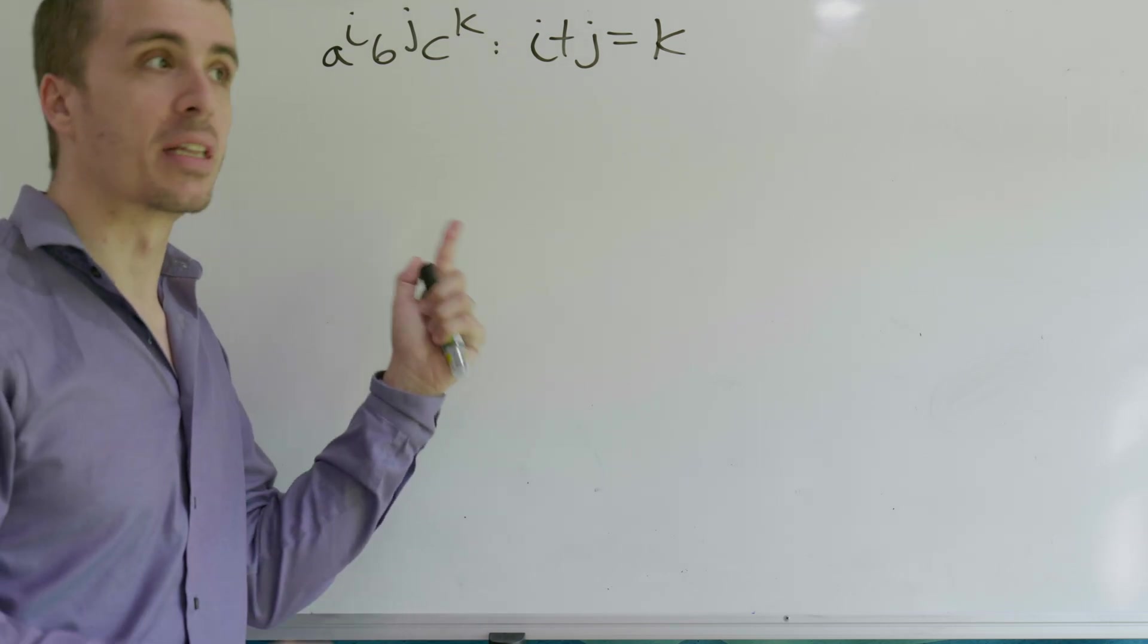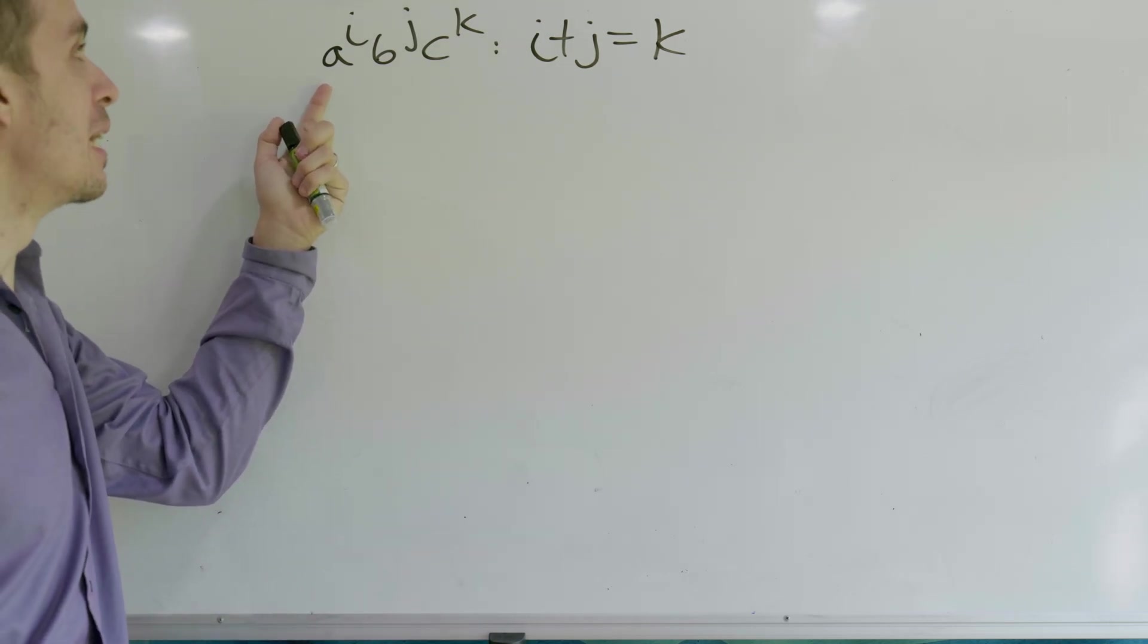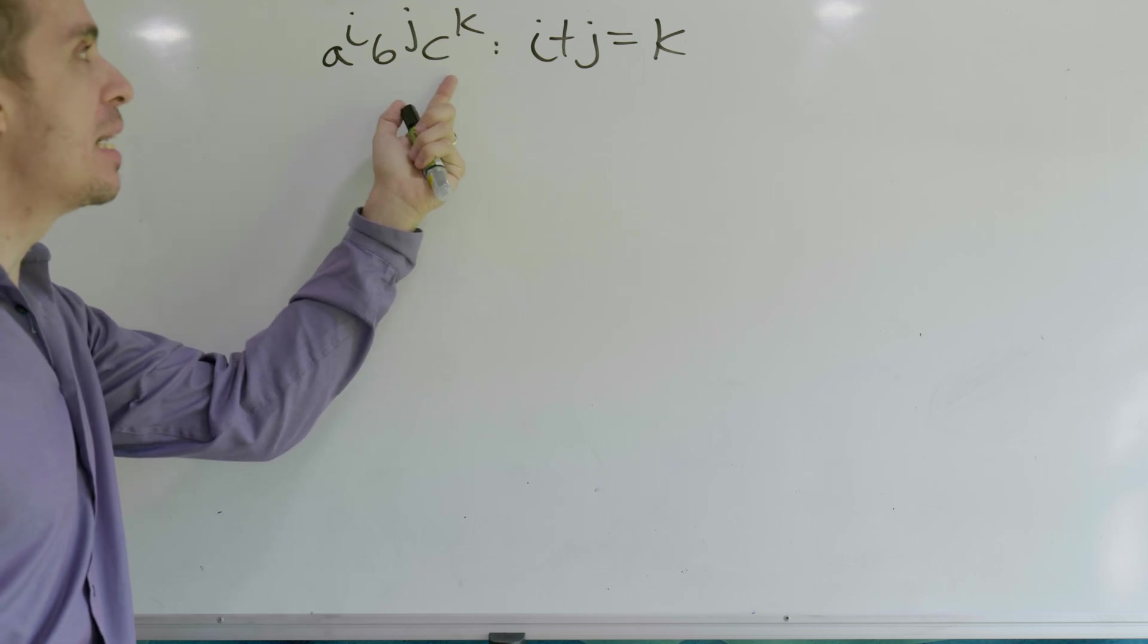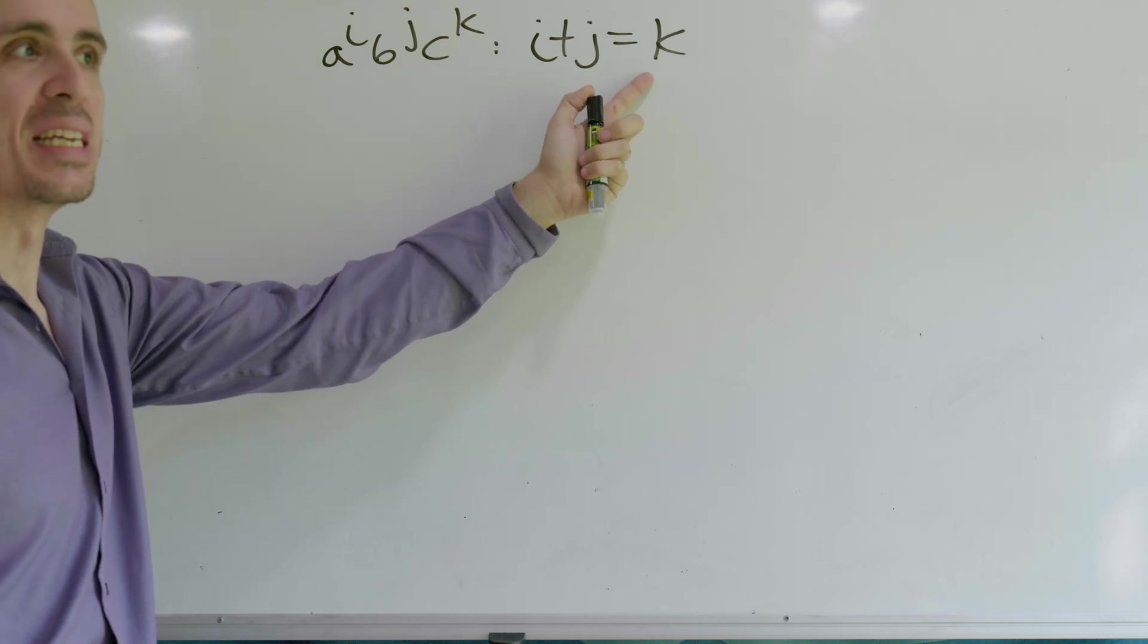Okay, let's make a context-free grammar for this language, which is the set of all strings a to the i, b to the j, c to the k, where i plus j is equal to k.